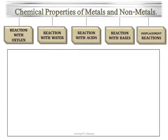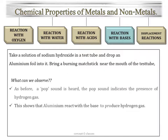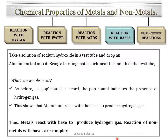Now let us study how metals and nonmetals react with bases. Take a solution of sodium hydroxide in a test tube and drop an aluminium foil into it. When a burning matchstick is brought near the mouth of the test tube, a pop sound is heard, indicating the presence of hydrogen gas. This shows that aluminium reacts with the base sodium hydroxide to produce hydrogen gas. Therefore, metals react with bases to produce hydrogen gas. Whereas the reaction of nonmetals with bases is quite complex — nonmetals form salts, carbon dioxide, oxides, etc.